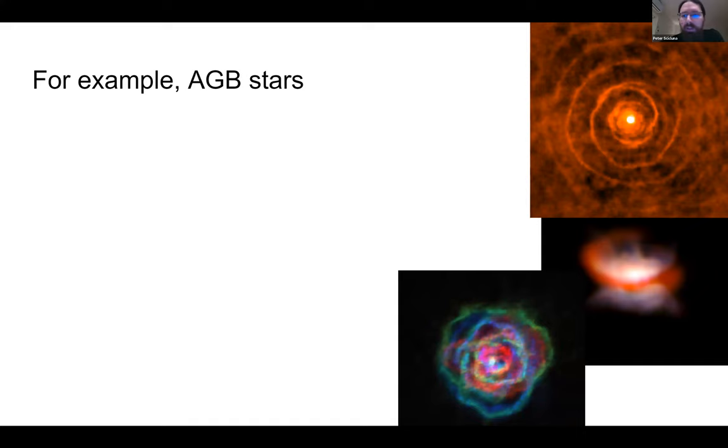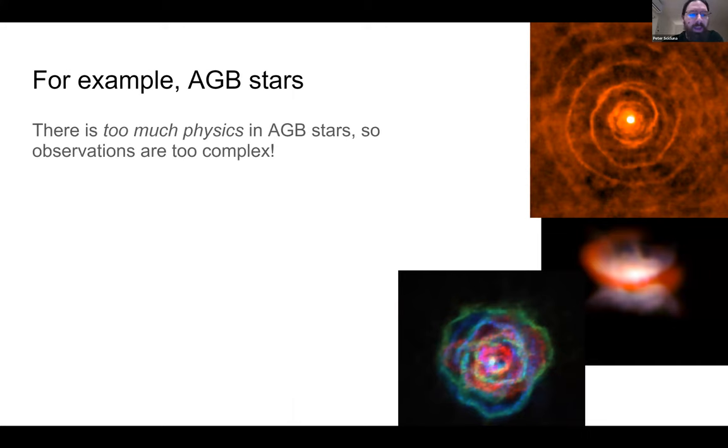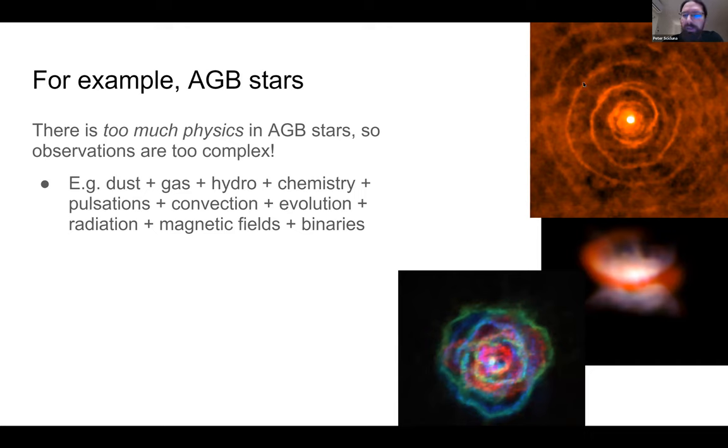For example, I will use AGB stars to show why things can get complicated and just how complicated they can get. AGB stars are supposedly simple, spherically symmetric things where you can apply some simple models and learn a lot, or at least that's what people thought about 15 years ago. And then they started discovering all these weird and wonderful shapes in all of them everywhere. And basically, what we've discovered is that there's too much physics in AGB stars, so the observations are too complicated to explain easily.